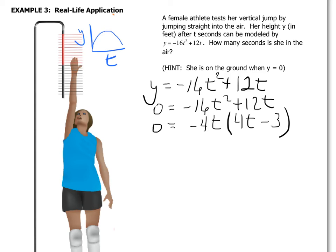So at this point, this is where we can use our zero product property. I get -4t equals zero and I get 4t - 3 equals zero. Again I would divide by -4 to isolate the t.